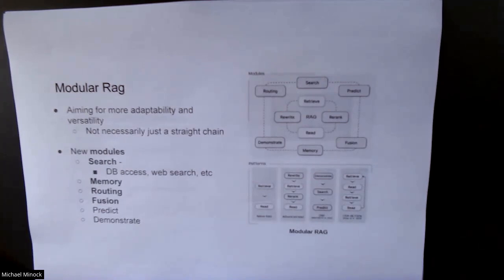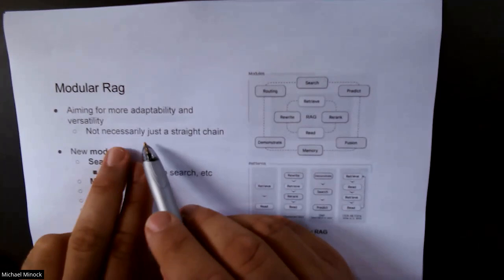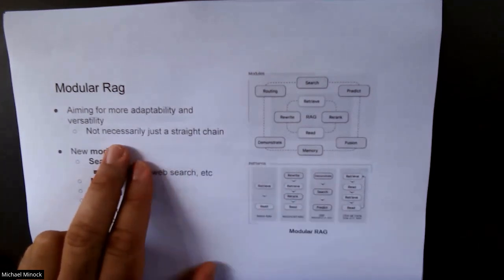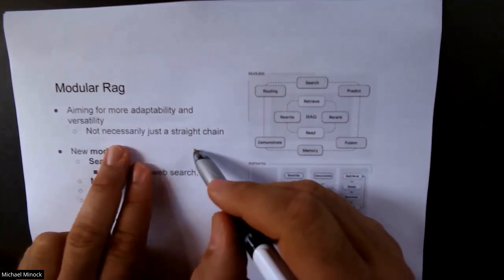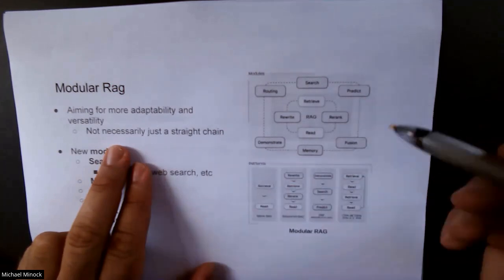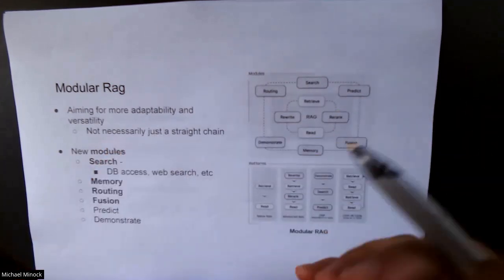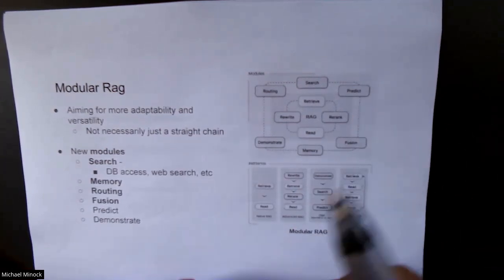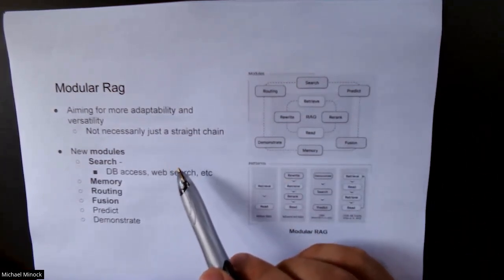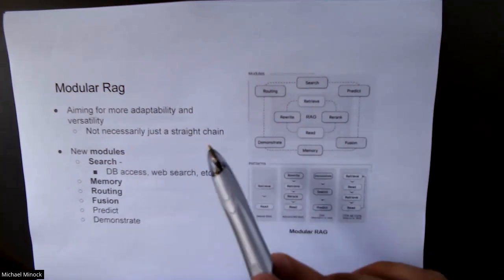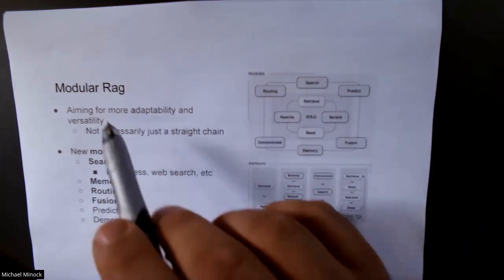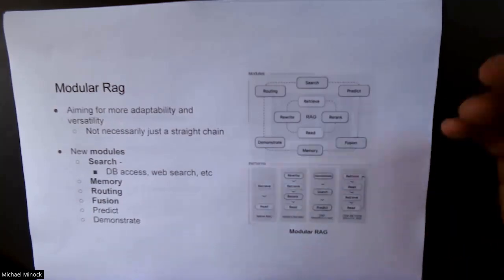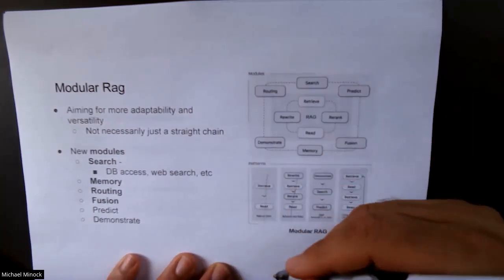Modular RAG assumes much more adaptability and versatility. Instead of just a chain of modules, it's a dynamic, reconfigurable graph of modules, and we take a particular path through that graph. We loosen up from single linear pipelines.